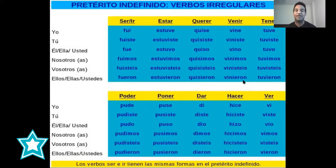Okay guys, very good. We now have the conjugation of these verbs. Remember that irregular verbs in Spanish don't follow any rule, so you need to learn them by heart. But the good news is that there are not too many verbs, so it's easy for you to learn them. Now you know all these verbs and how to conjugate them.